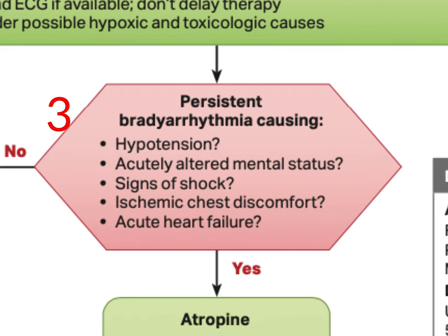The American Heart Association has identified five criteria as the most appropriate ways to make the determination of stable versus unstable — the same identical criteria seen on the tachycardia algorithm. One of these symptoms alone doesn't automatically justify aggressive treatment, and there is still room for clinical judgment. But the more of these symptoms that are present, or the more severe they are, the more we should consider moving straight to pacing or atropine.